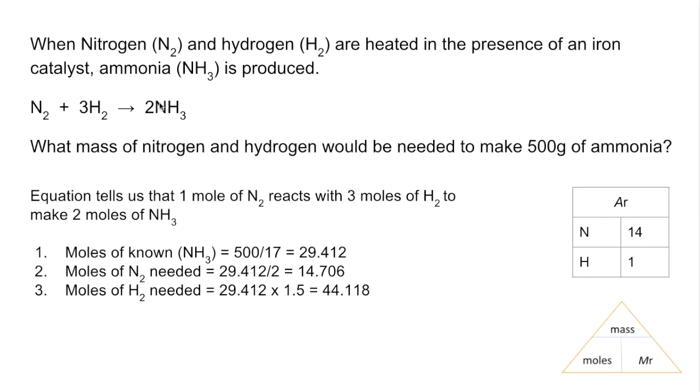If you just think about the numbers in front, that's what I tell my students - the bigger number is in front of the hydrogen, so we're going to multiply by three over two or 1.5 is what I've done to get the moles of hydrogen needed. So that's 44.118. Basically if we've got a bigger number in front of a chemical, we're going to need more moles than a smaller number in front.